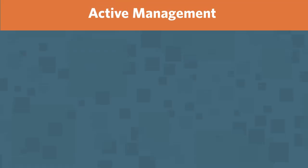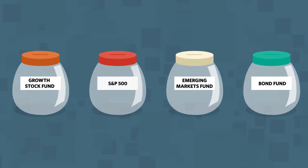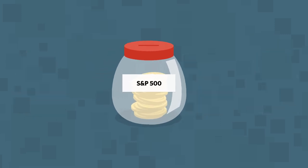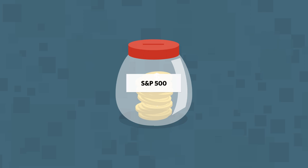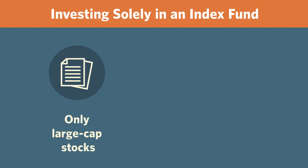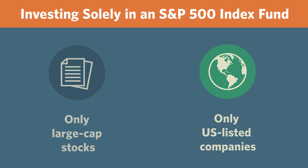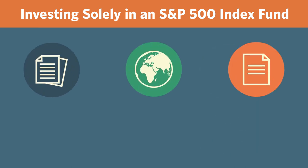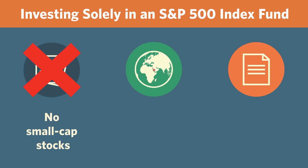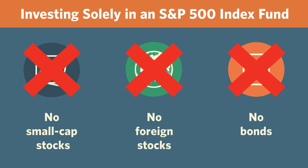Let's now look at the question of active management. Suppose you decide to put all of the cash you have available for investing into an S&P 500 index fund. Even though you've invested solely in an index fund, that's an active decision, at least implicitly. It's active in the sense that you've decided to invest in a fund that holds only large-cap stocks that are U.S. listed companies. By investing solely in an S&P 500 index fund, you've decided not to hold any small-cap stocks, any foreign stocks, or any bonds. You've made an active decision. So that's one sense in which active management is everywhere.